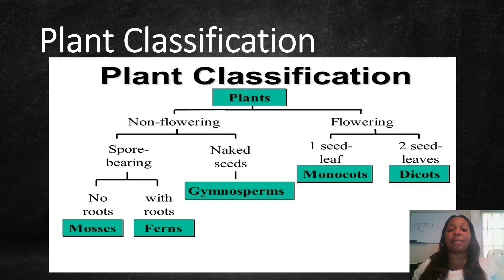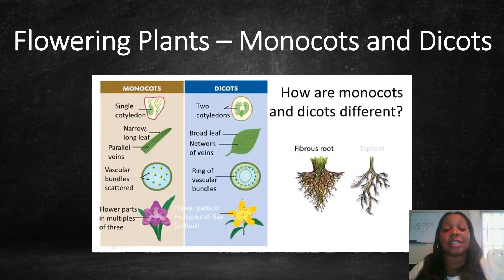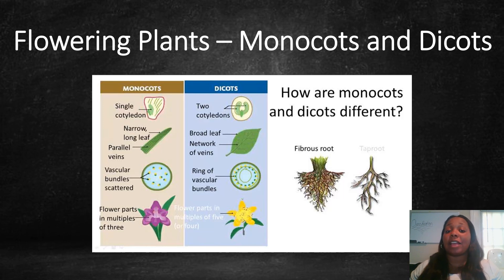Non-flowering plants can be divided into two groups as well: spore-bearing and naked seeds. The spore-bearing plants are mosses and ferns. The naked seed plants are called gymnosperms. Flowering plants can be divided into two groups: monocots and dicots. Monocots have a single embryonic seed, narrow long leaves, parallel veins, scattered vascular bundles, and flower parts in multiples of three. Dicots have two embryonic seeds, broad leaves, a network of veins, a ring of vascular bundles, and flower parts in multiples of five or four.